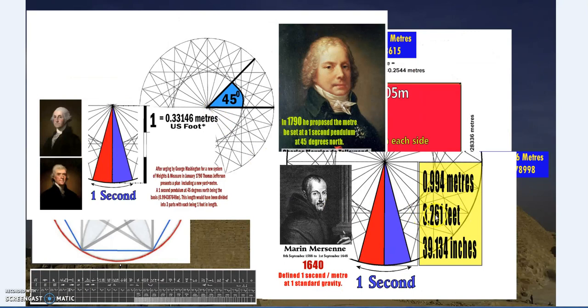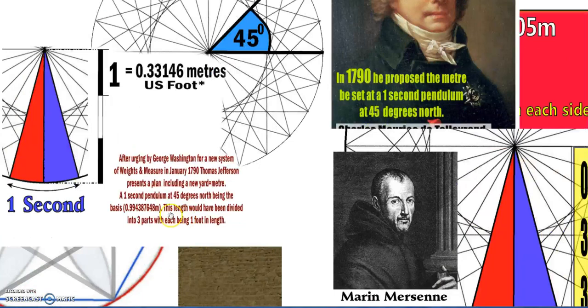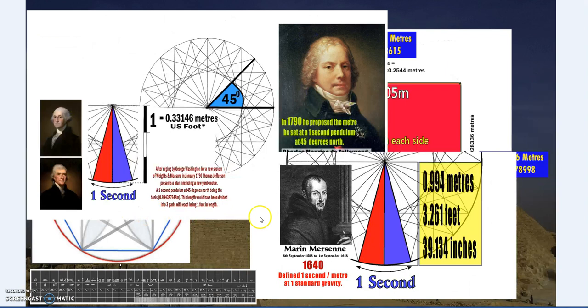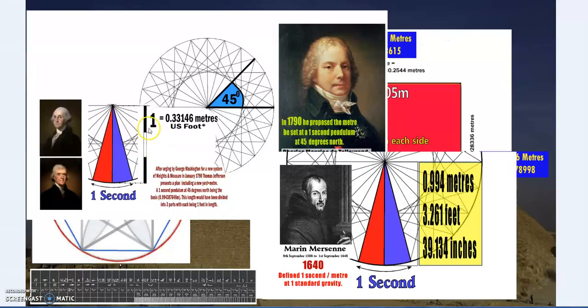That was one third of a one second pendulum at 45 degrees north—0.994 meters. So one yard in the US very well was going to be 0.994 meters or a one second pendulum 45 degrees north of the equator.